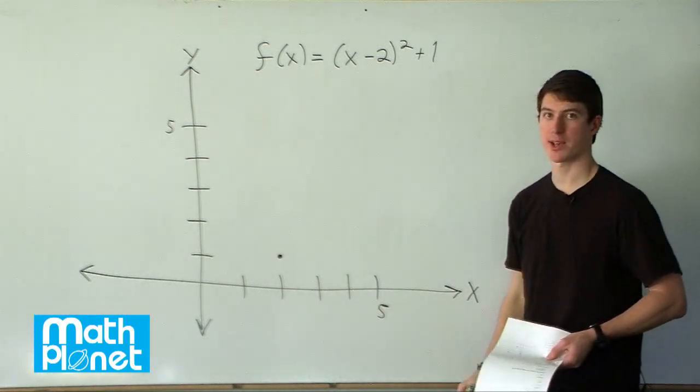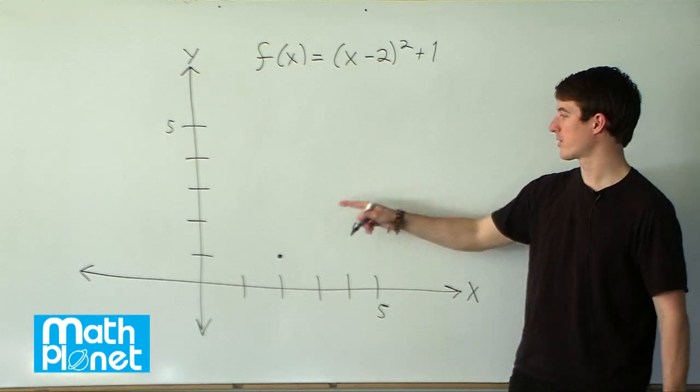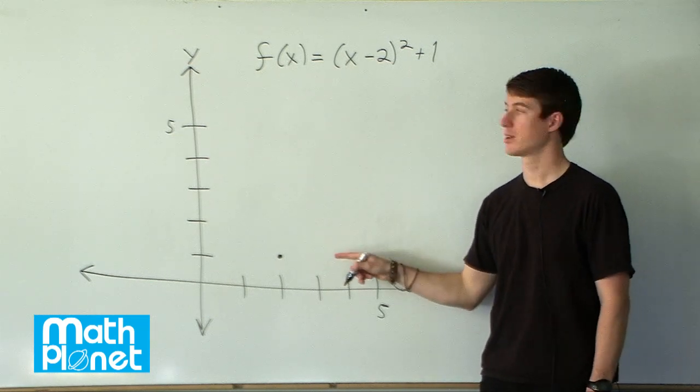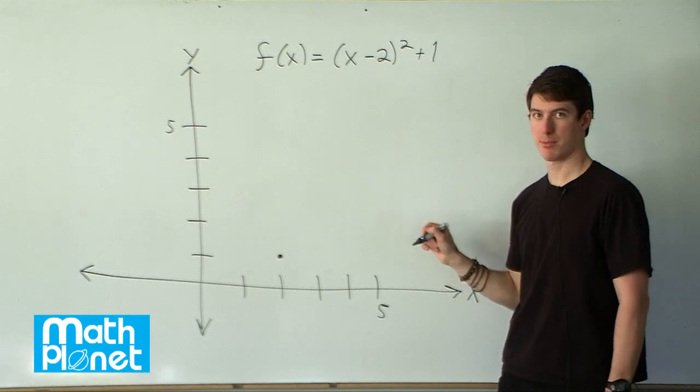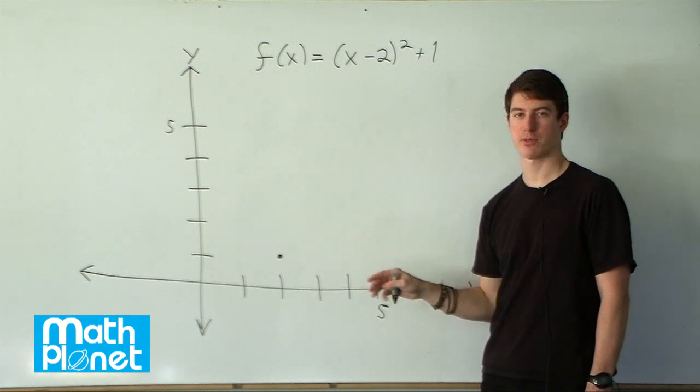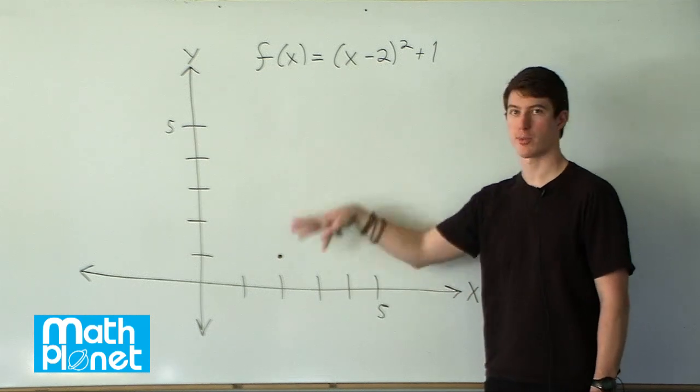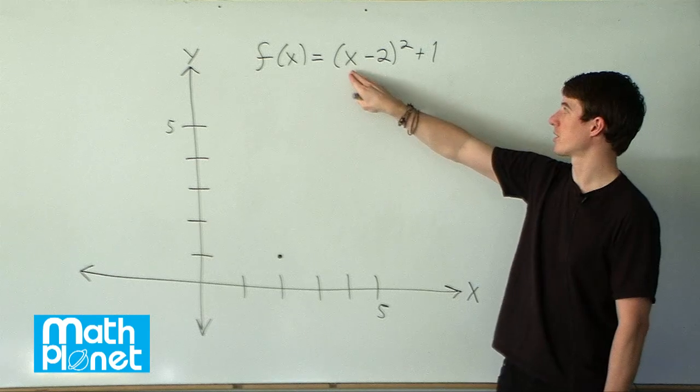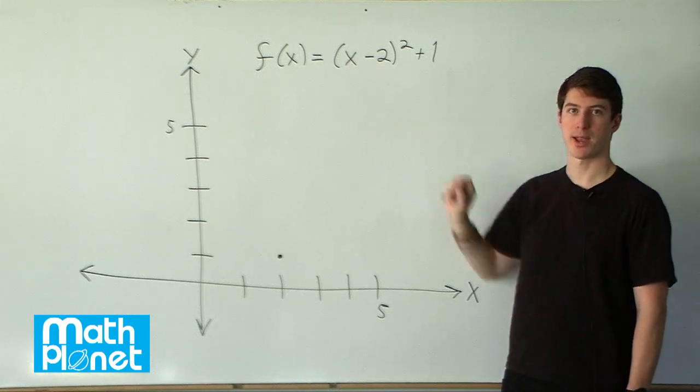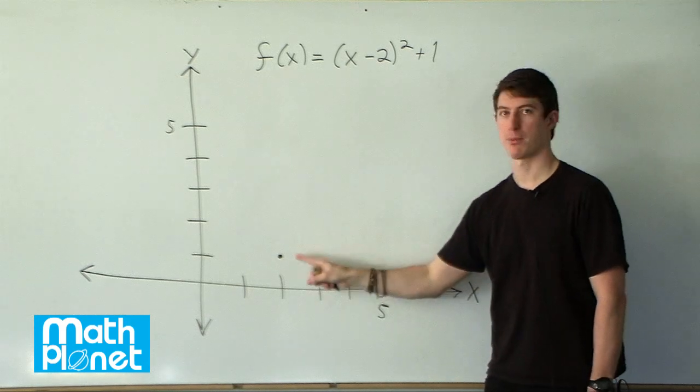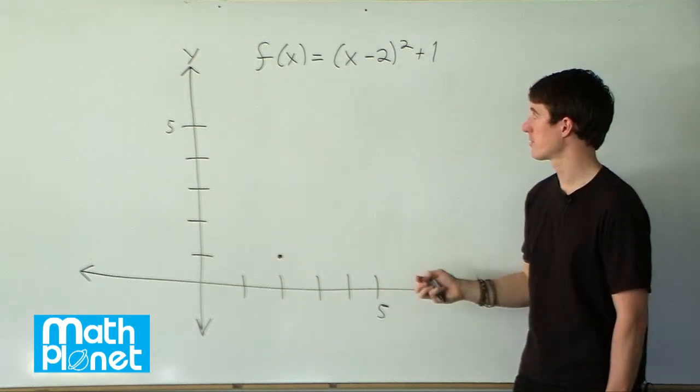Now how do we know if this is a maximum or a minimum? Well, it has to be a positive coefficient in front of the x squared to be a minimum, so a parabola that's opening up. And if there's a negative coefficient in front of that x squared term, then it's going to be opening down, a frowny face as opposed to a smiling face. We can already see if we expand this, we're going to have a positive x squared. So this is a minimum, an opening up parabola or a smiling face.